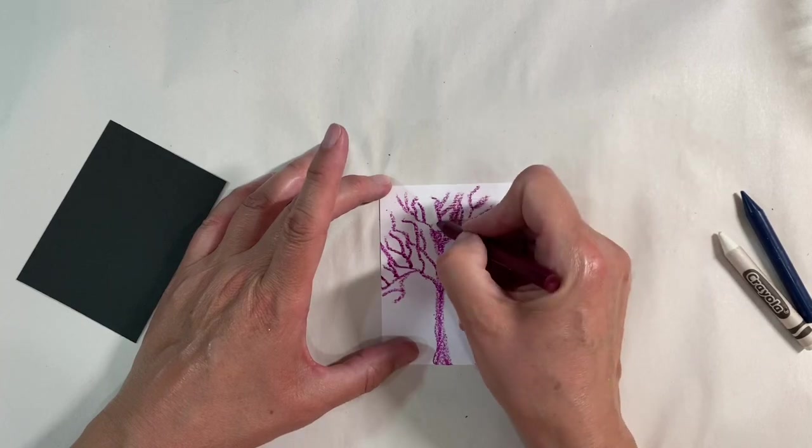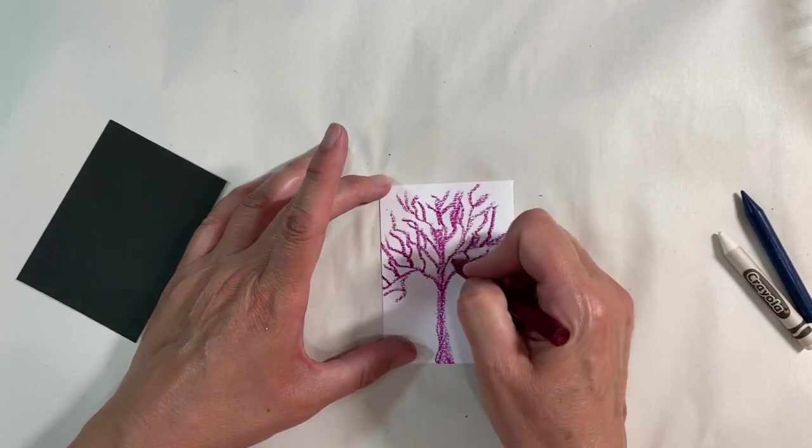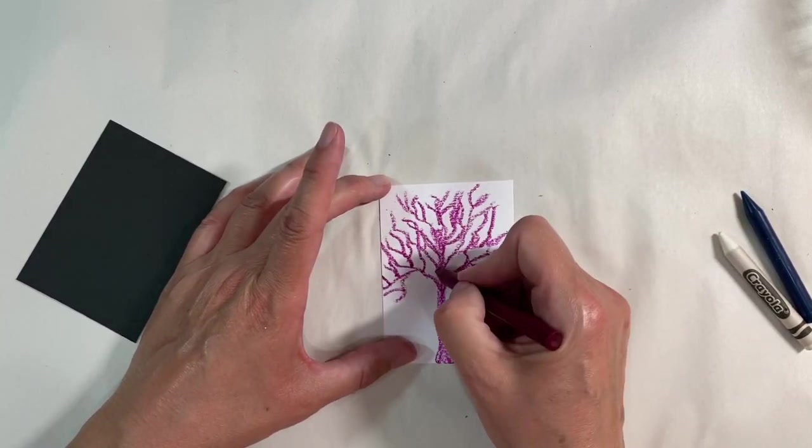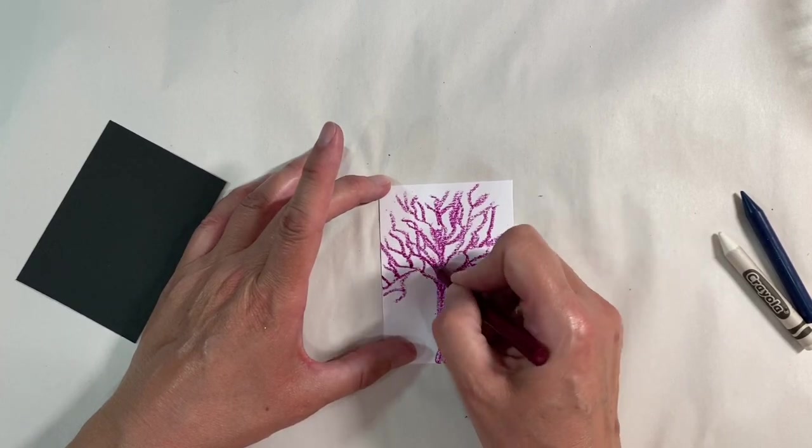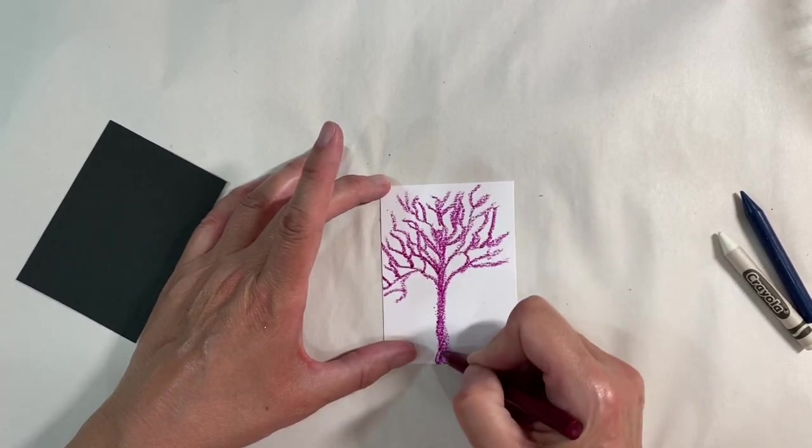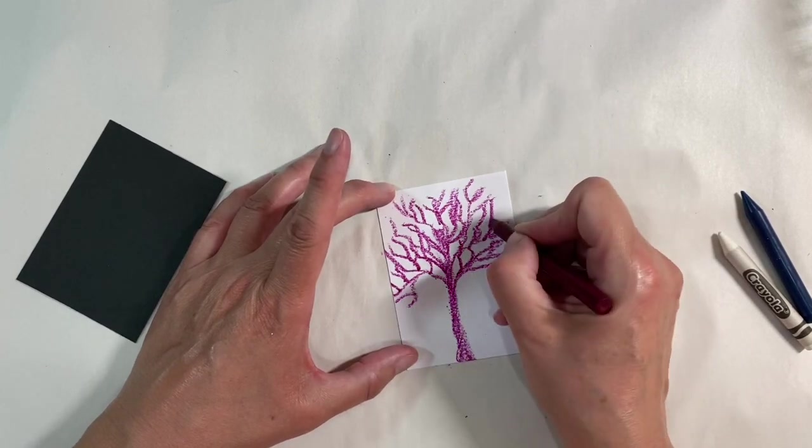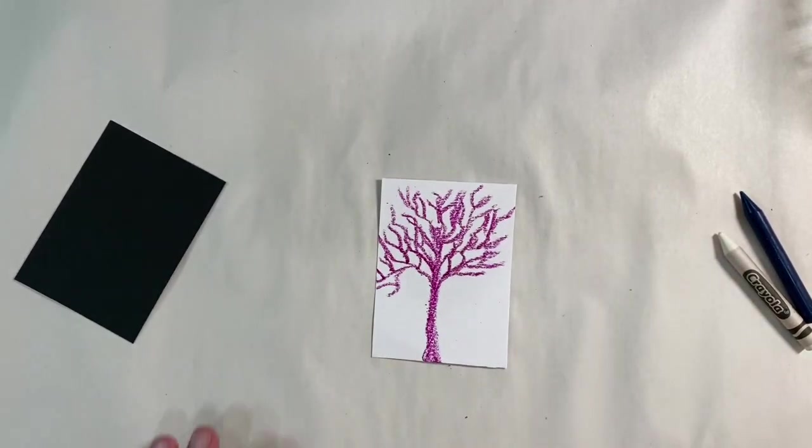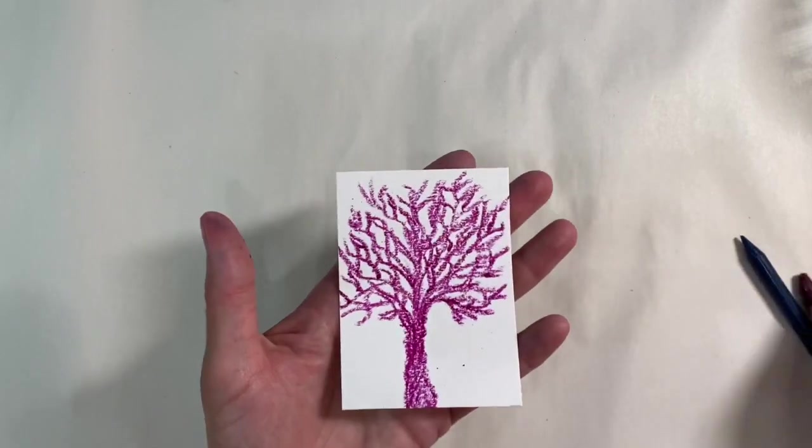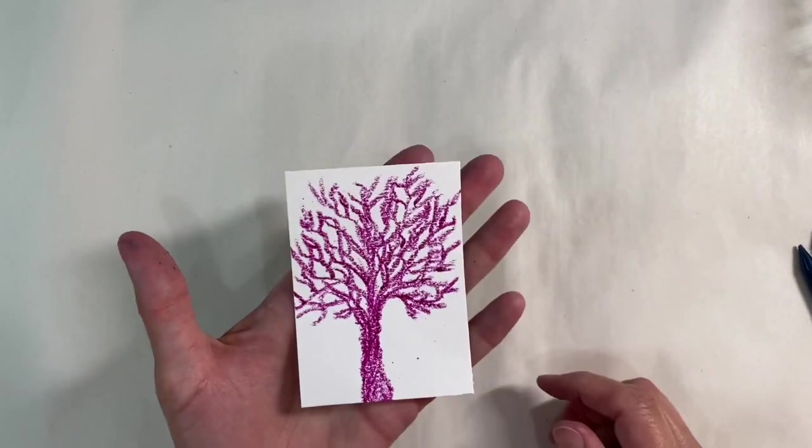I don't know why I decided to use burgundy, but I just thought it was a nice autumnal color because things are starting to turn very autumnal here in the UK, and I'm sure they are for many of you as well. I'm just going to fiddle around with this until I get my basic tree shape that I'm happy with.